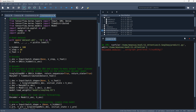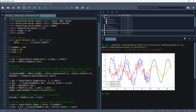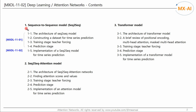Let's run this code — the results are as follows. So far, we have looked at the sequence-to-sequence model and used it to predict time series. In the next video, we will look at the sequence-to-sequence attention network.